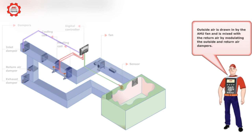Outside air is drawn in by the air handling unit fan and is mixed with the return air by modulating the outside and return air dampers.